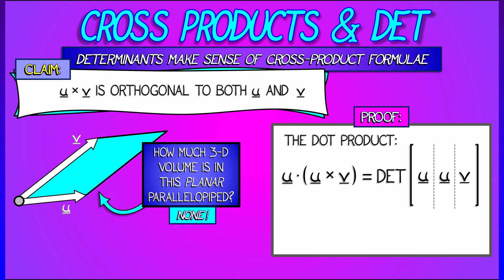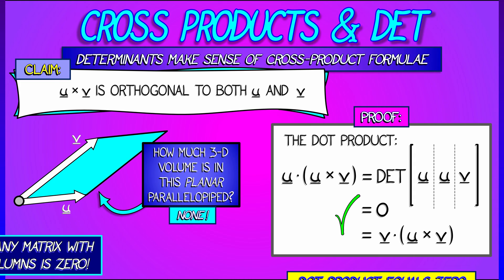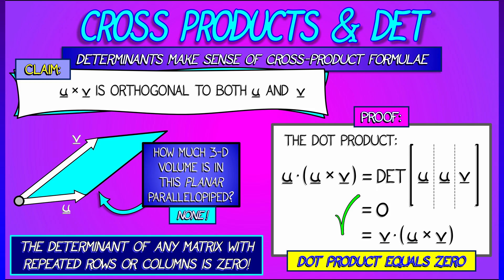It's just a 2d parallelogram. It has no three-dimensional volume. None. So that means that u dotted with u cross v is zero. Same as with v, that means that u cross v is orthogonal to both u and v.